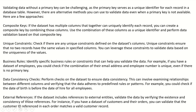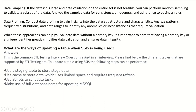The next approach is external references — if the data set includes references to external entities, validate the data by verifying the existence and consistency of those references. For instance, if you have a dataset of customers and their orders, you can validate that the customer ID referenced in each order matches a valid customer record. Another approach is data sampling — if the data set is large and validation on the entire set is not feasible, you can perform random sampling to validate a subset of data, analyzing it for consistency, uniqueness, and adherence to business rules.